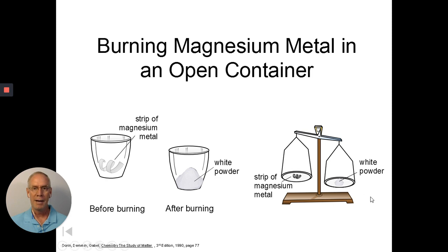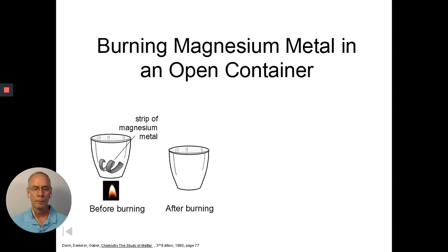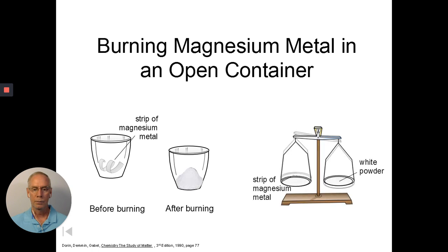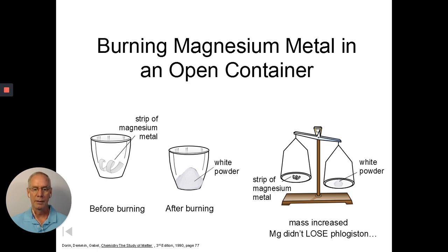So, that would be evidence, experimental evidence, to support the combustion theory of matter. And it would basically say the phlogiston theory of matter is not correct. All right, we'll kind of look at that again. I guess we're just seeing it animate, getting heavier after we're done. That's fine. So, the mass increased. And the magnesium did not lose phlogiston. But instead, it gained oxygen. All right, great.